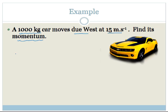So we know the equation p is equal to m times v, where p is momentum, m is mass, and v is velocity. They've told us that the mass of the car is a thousand kilograms, and we know the velocity is 15 meters per second.